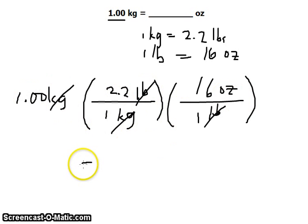If you multiply everything, you get an answer: 1 times 2.2 times 16. You get a final answer in 3 significant figures: 35.2 ounces.